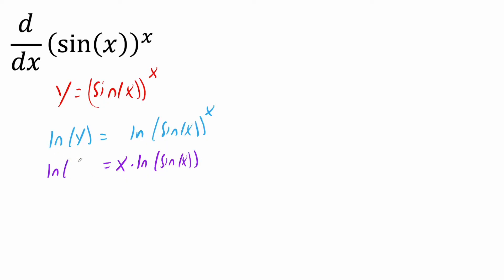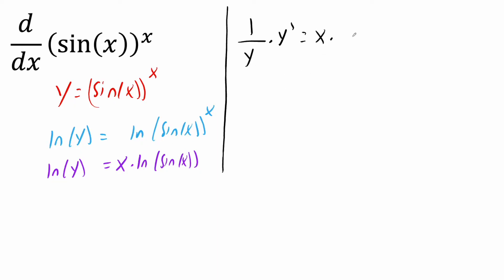This piece remains the same: ln(y). Now in this form we'll go ahead and take the derivative. The derivative of ln(y) gives us 1/y times y prime. The right side involves the product rule — 1d2 plus 2d1. So x times the derivative of ln(sine(x)), which is 1/sine(x) times cosine(x), plus ln(sine(x)) times the derivative of x, which is just 1.